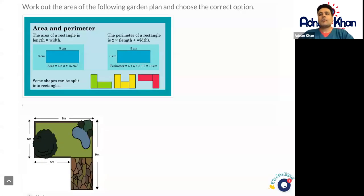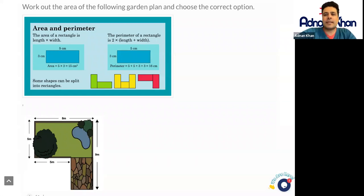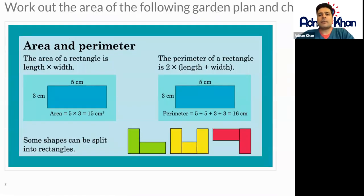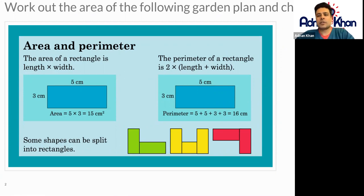Welcome to Key Stage 2 Higher Year 6 Area and Perimeter. Let's have a look at these types of questions. The area of a rectangle is simply length times the width. The length will be the long section and the width will be slightly smaller.